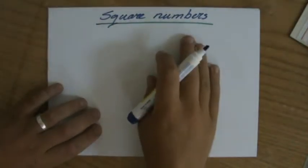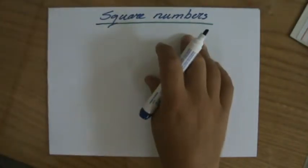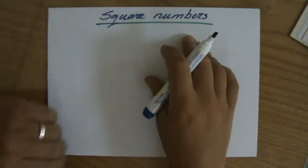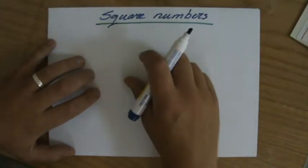I'd like to talk about square numbers for a while because they are very important numbers in maths and you will encounter them a lot. It's important that you are able to identify when a number is a square number.